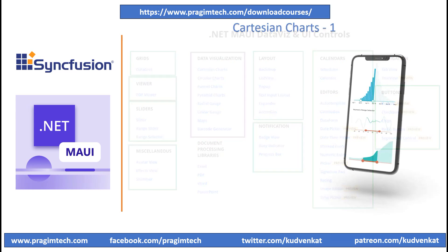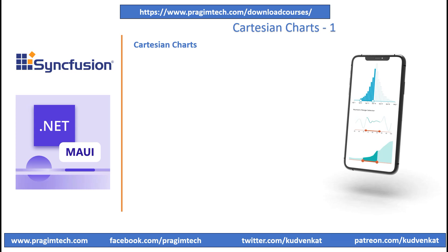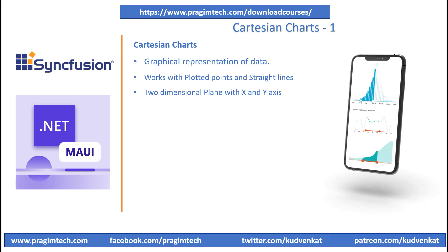A Cartesian chart, also known as a coordinate chart or rectangular chart, is a graphical representation of data in which data points are plotted and connected by straight lines. It is named after the French mathematician and philosopher René Descartes, who introduced the Cartesian coordinate system. The Cartesian coordinate system is a two-dimensional plane formed by two perpendicular axes, the horizontal x-axis and the vertical y-axis.